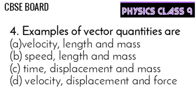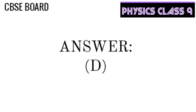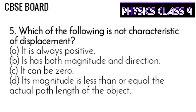Question 4: Examples of vector quantities are — velocity, length and mass; speed, length and mass; time, displacement and mass; or velocity, displacement and force. The answer is D — velocity, displacement and force.